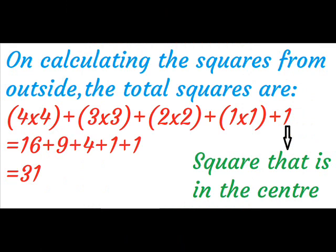It forms a square inside the square. On calculating the squares from outside, the total squares are 31.